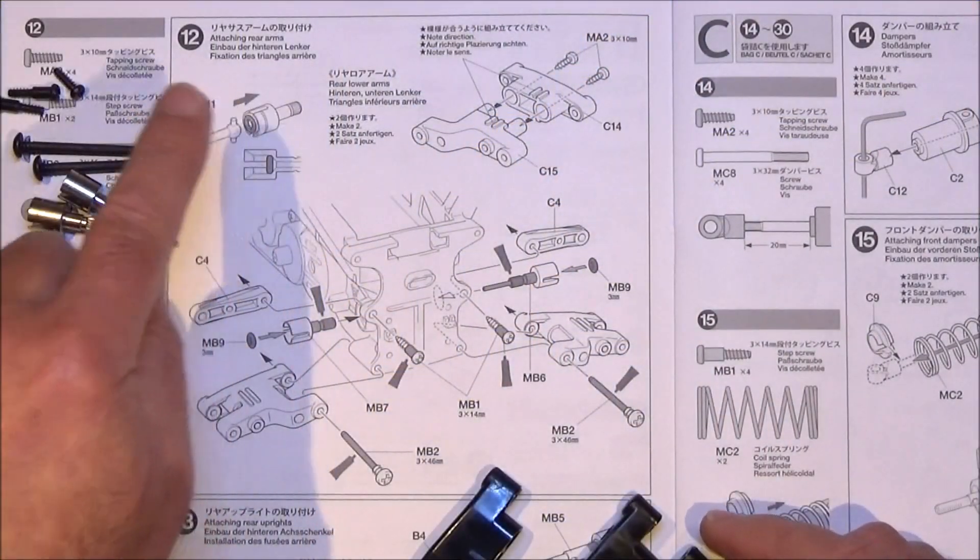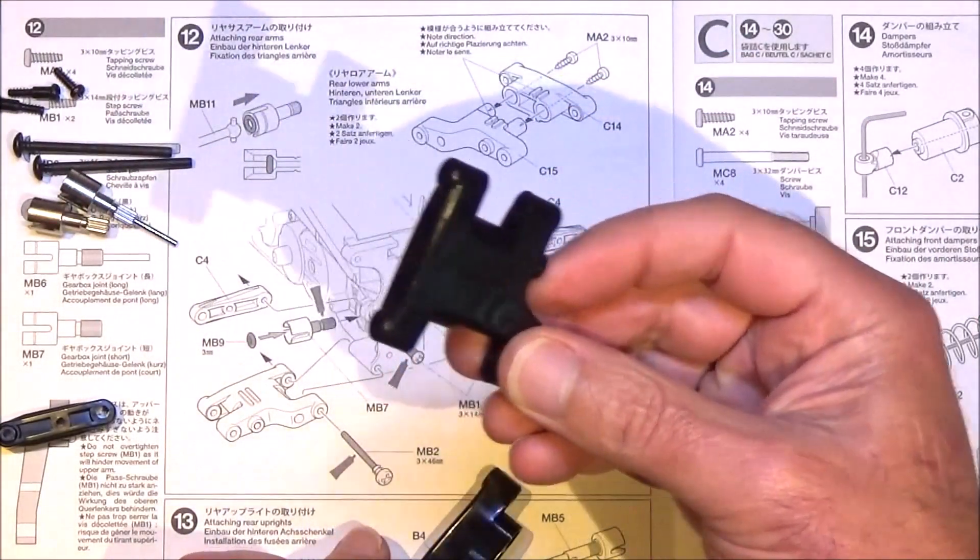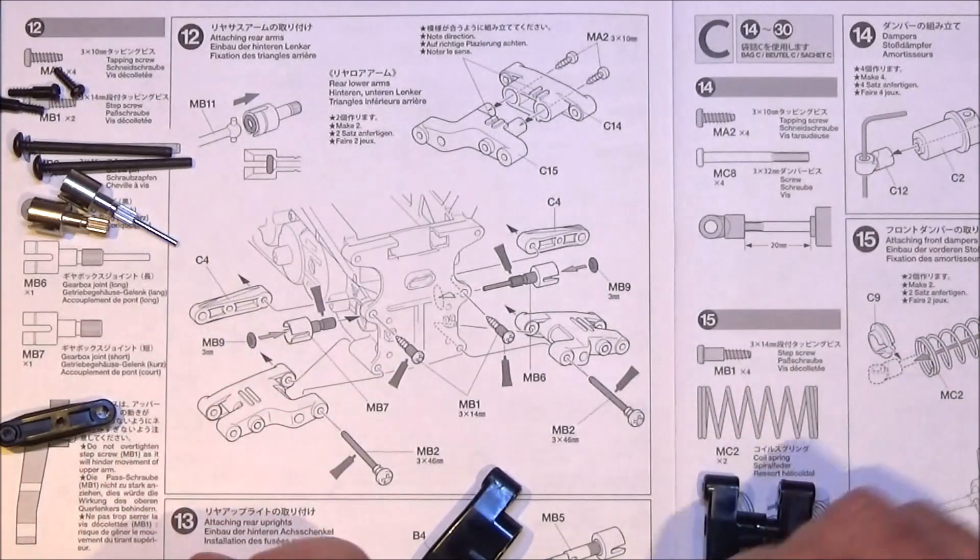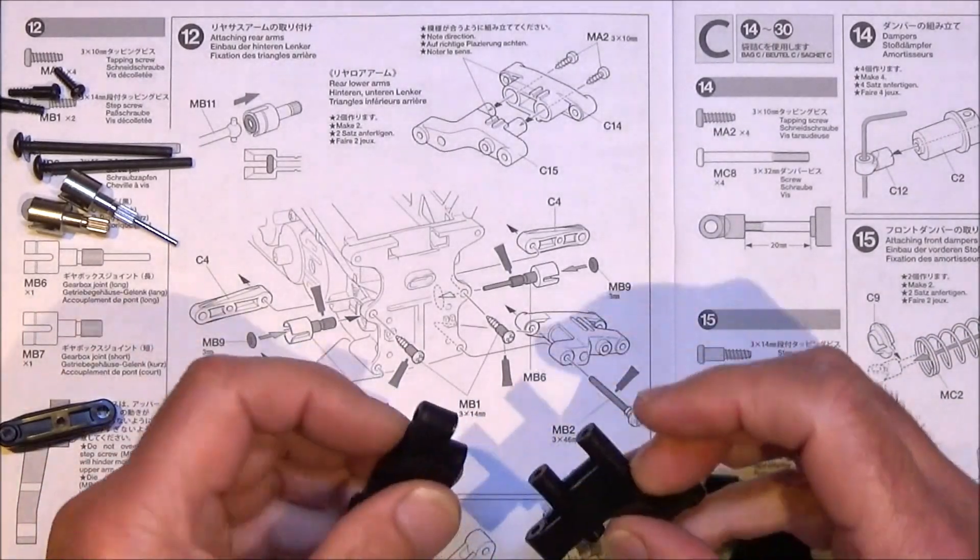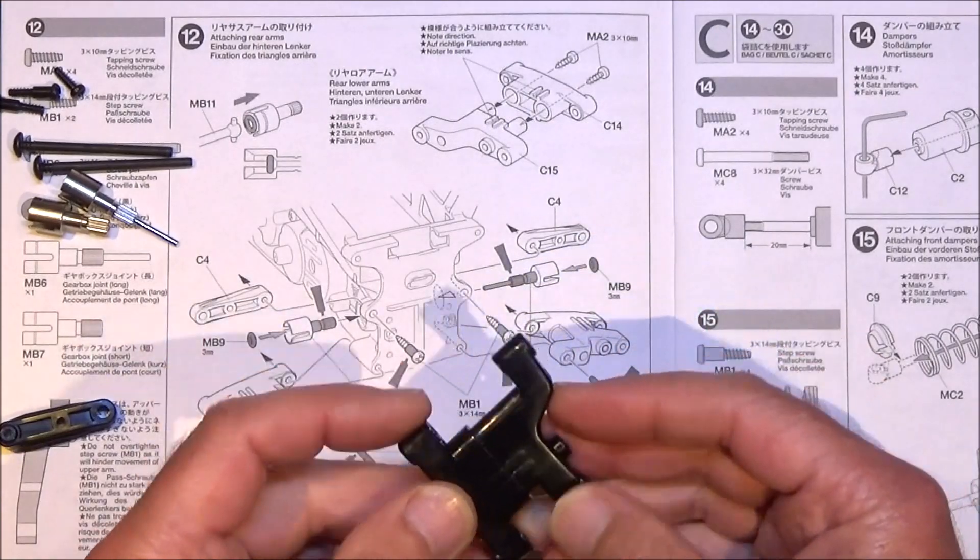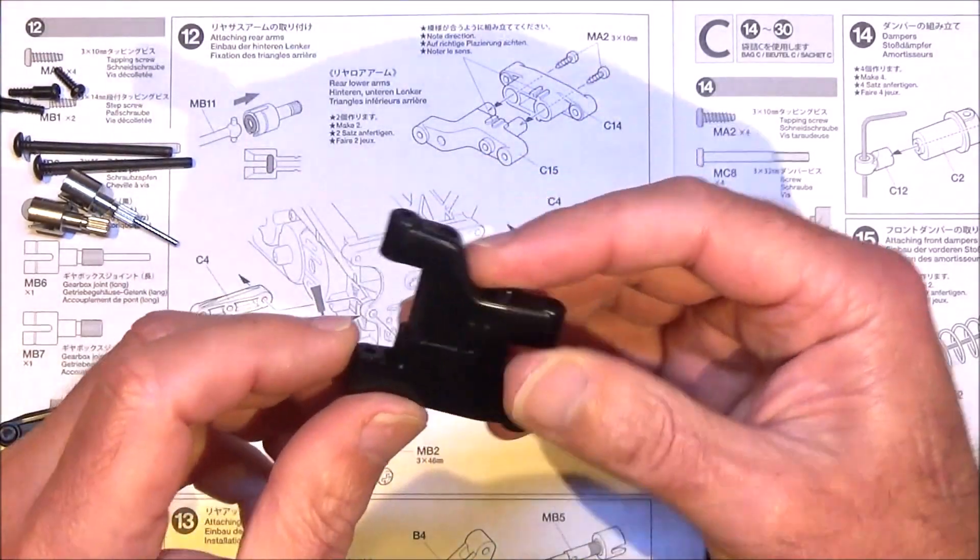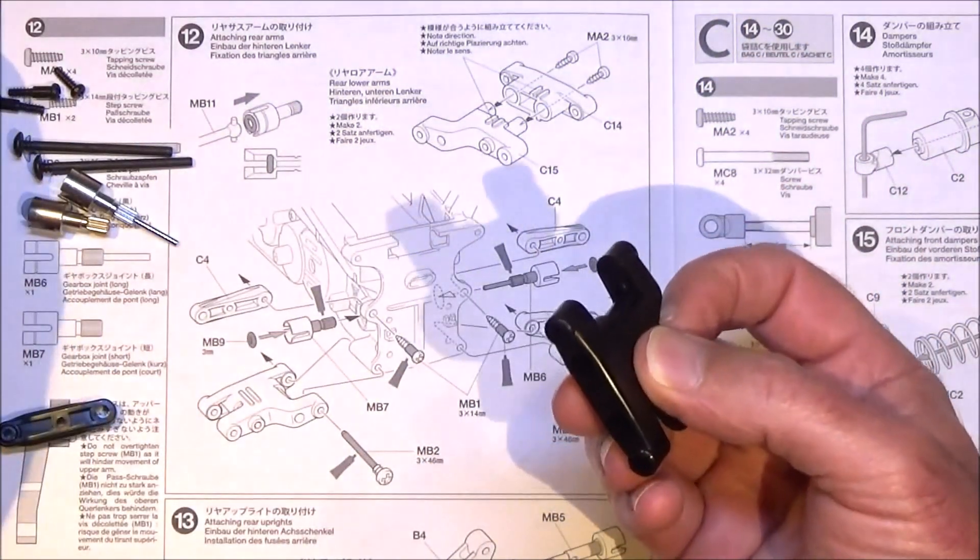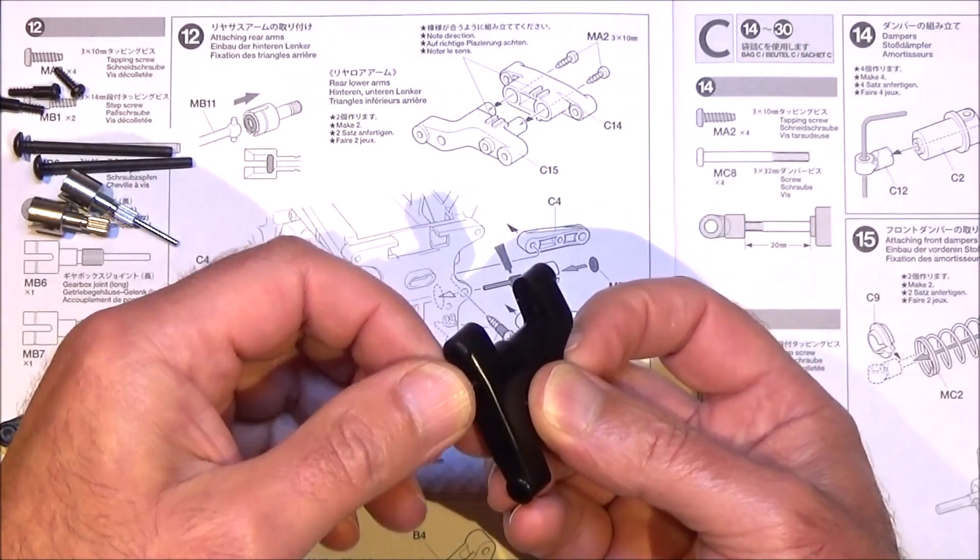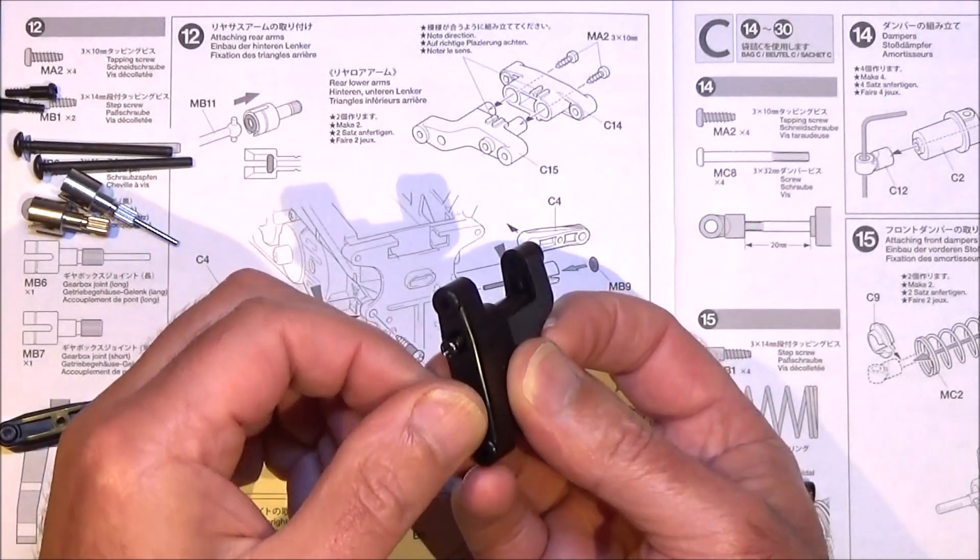On to step 12 where we're going to attach the rear arms. I've made one rear arm up as you can see. You need parts C14 and C15 and as it shows they only go one way. You've got the two markings there that you need to match up. Then you've got your two 10mm screws that hold the two together.